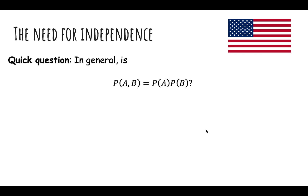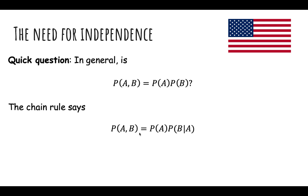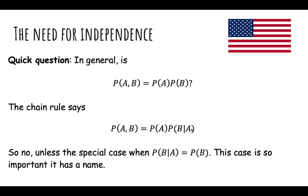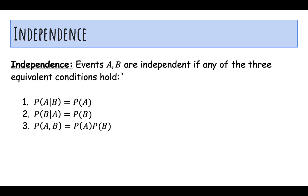In general, is the probability of A and B equal to the probability of A times the probability of B? Well, the chain rule says P(A and B) = P(A) × P(B|A). So no, unless the special case where the probability of B given A is the same as the probability of B. This case is so important it has a name. Events A and B are independent if any of the three equivalent conditions hold: P(A|B) = P(A), P(B|A) = P(B), or P(A and B) = P(A)×P(B). Intuitively, given that B happened, the probability of A is the same as if I didn't know anything — the unconditional probability of A.